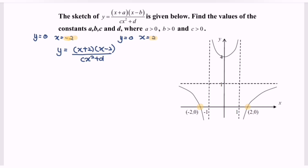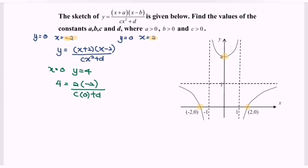So after we determine the x-intercept, now we are going to determine the y-intercept. The y-intercept is at the point (0, 4), meaning that when x equals zero, y equals four. Kindly substitute this into the function where we have four equals zero plus two, multiplied by zero minus two, over c multiplied by zero squared plus d. Cross multiply the situation where we have four d equals negative four, and d will be equals to negative one.